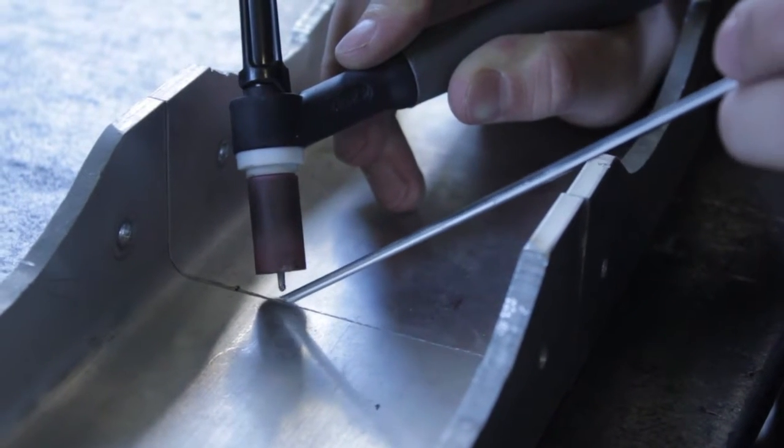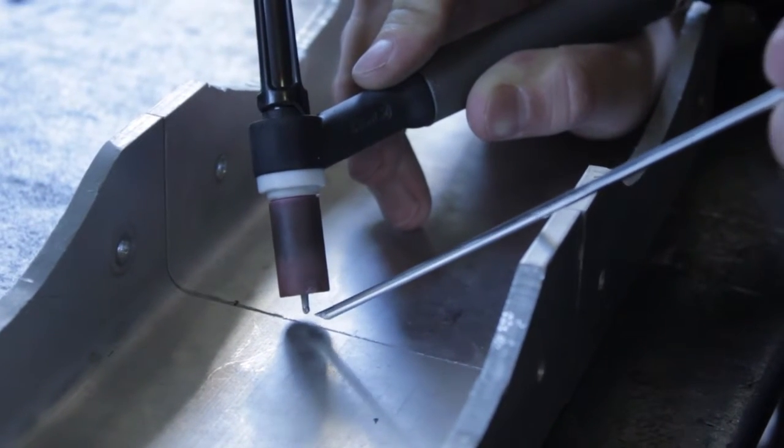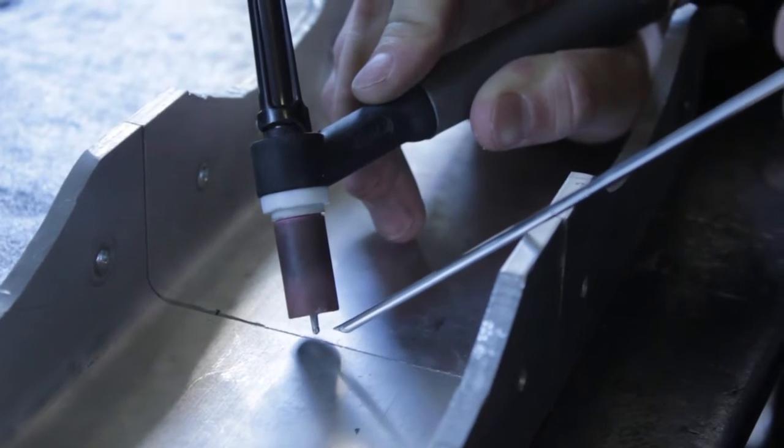Notice the frequency at which the filler rod is being used. If you see that the puddle is getting too narrow and you are barely penetrating the material, use the pedal to increase your amperage.